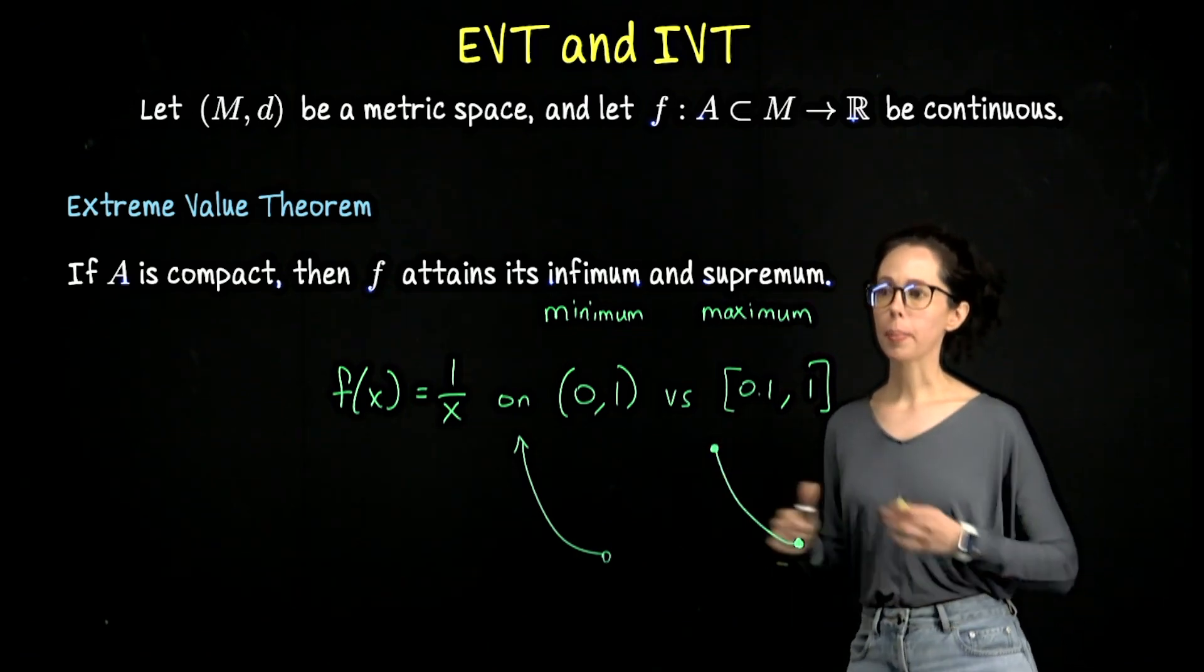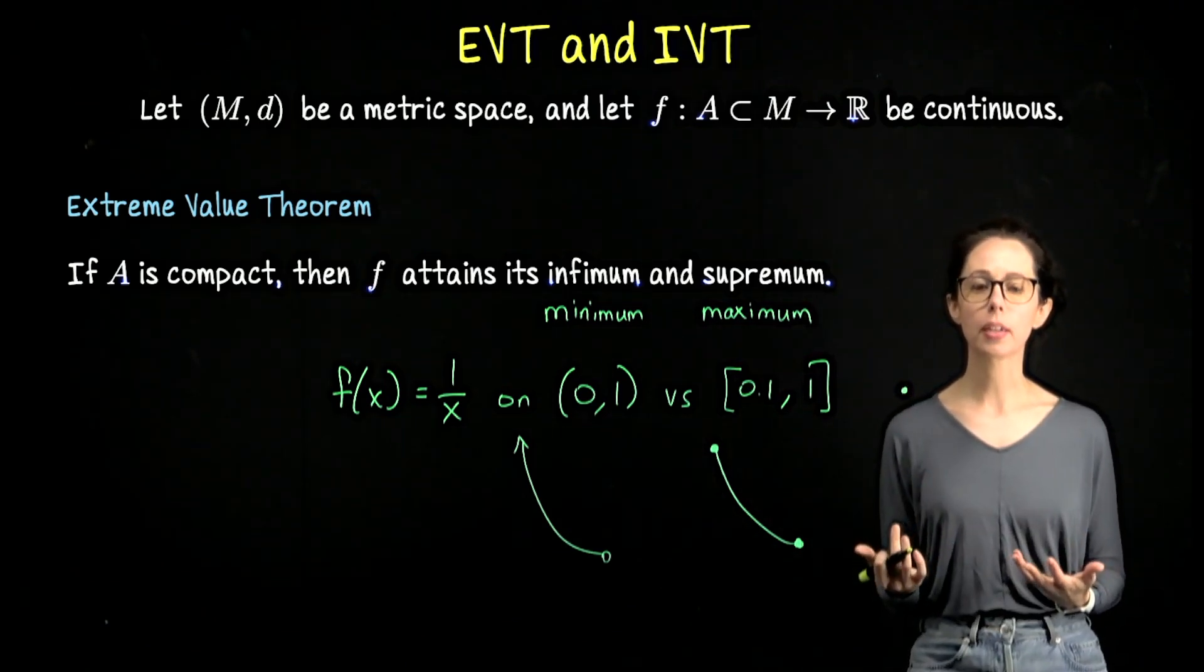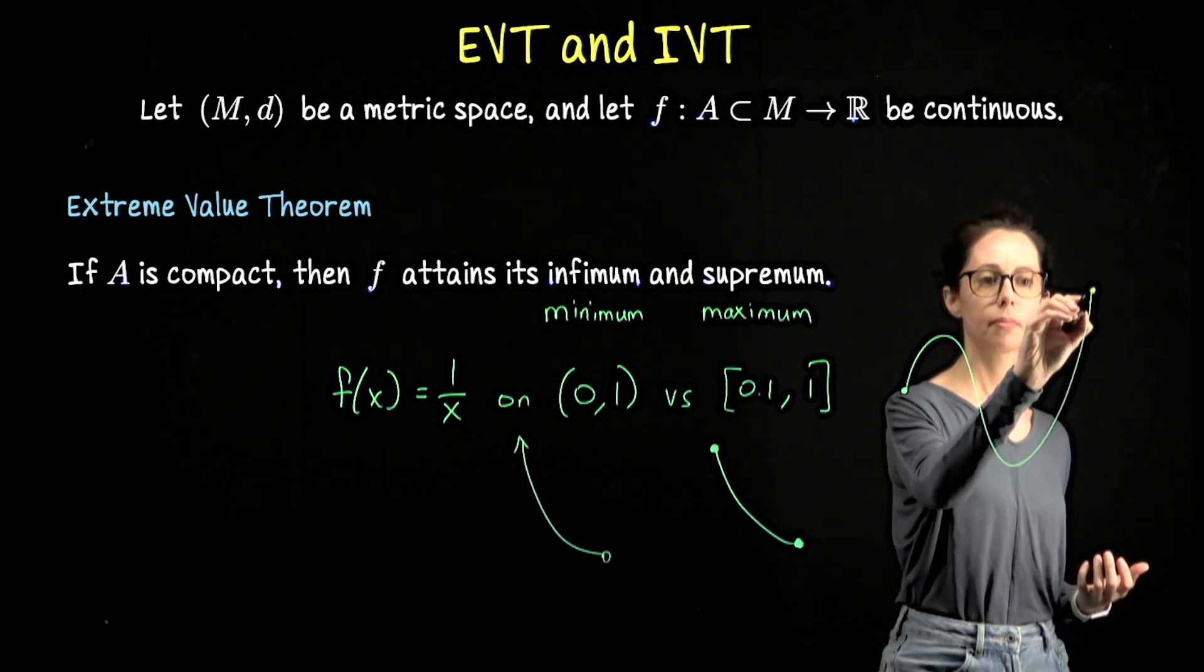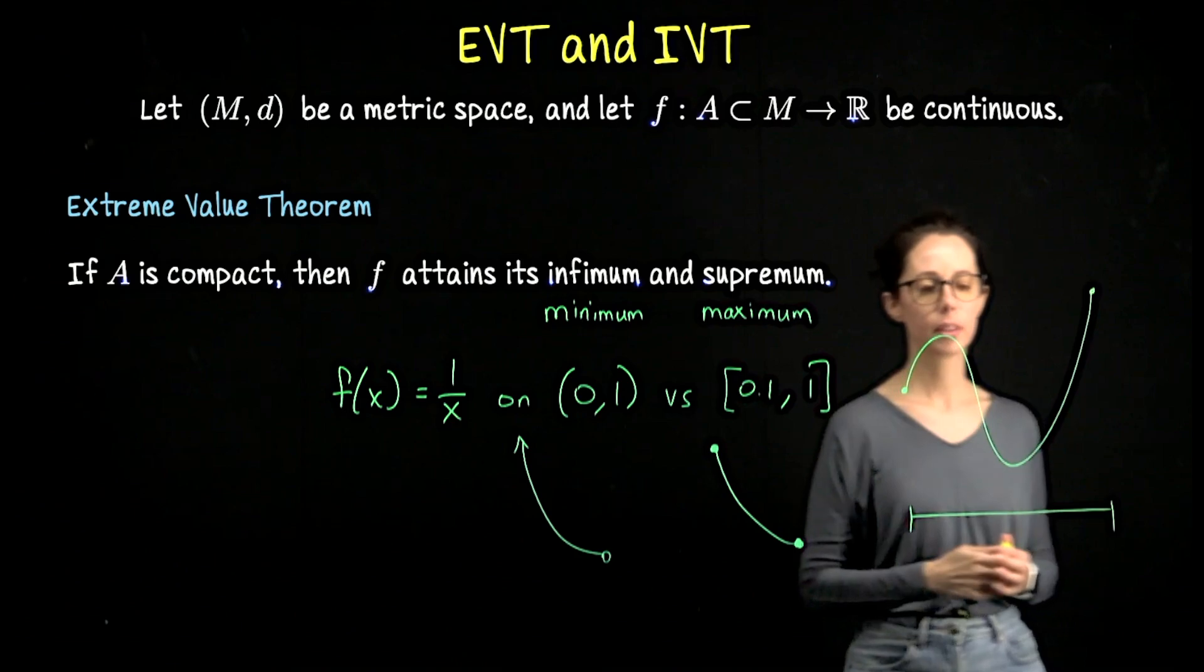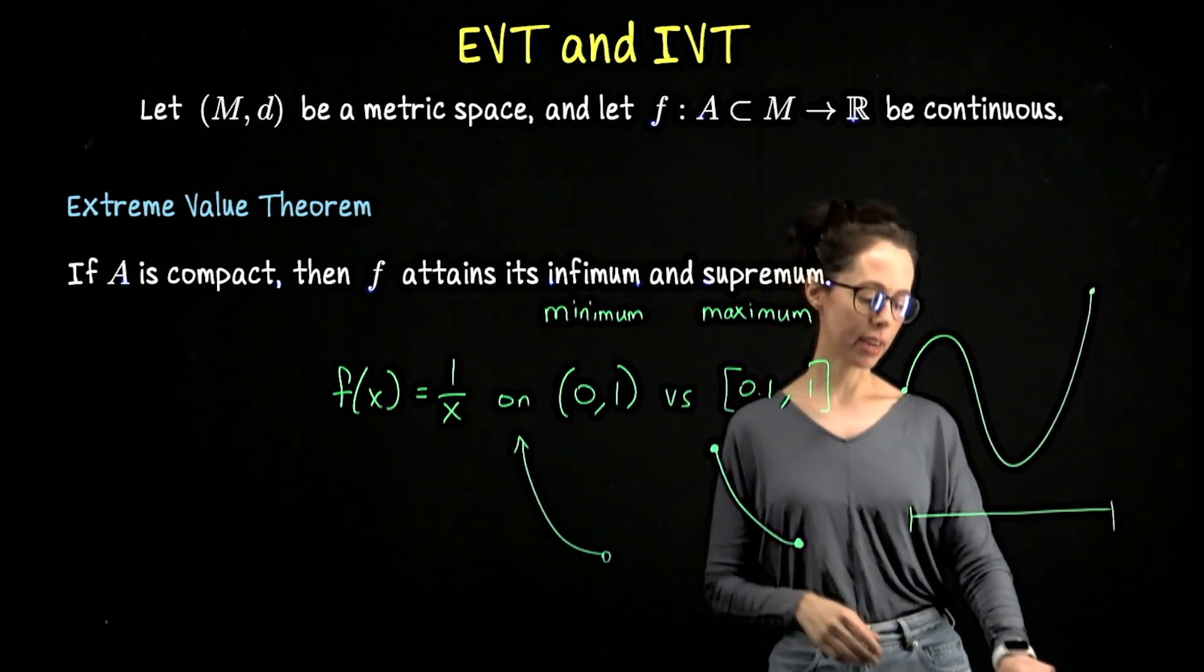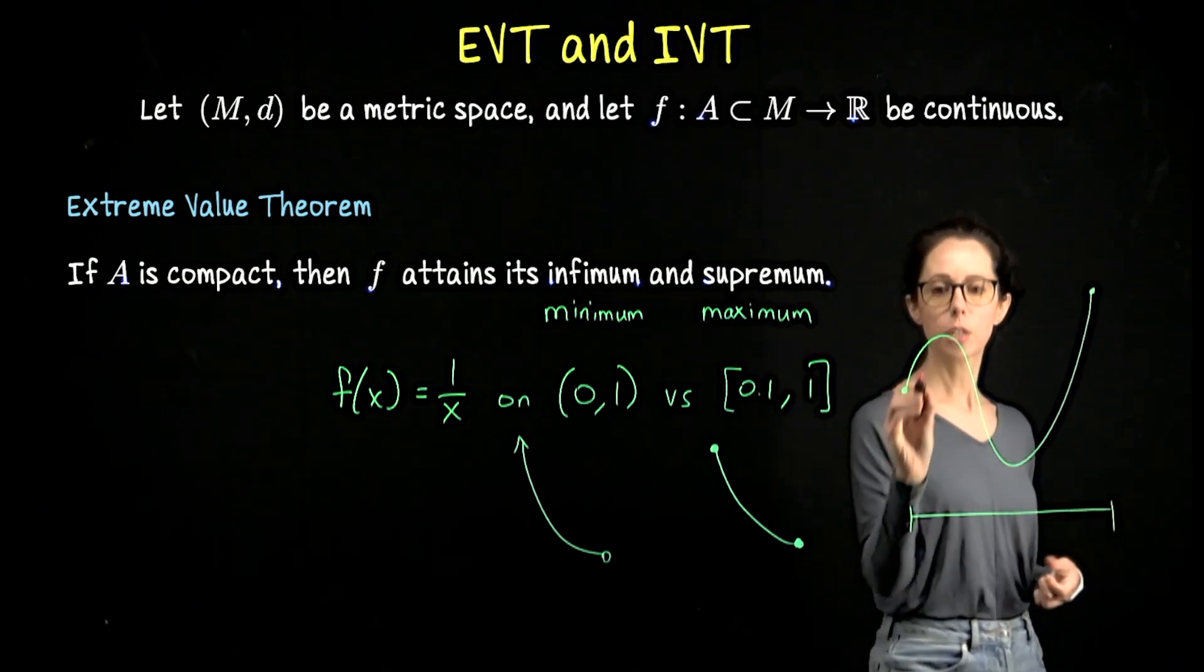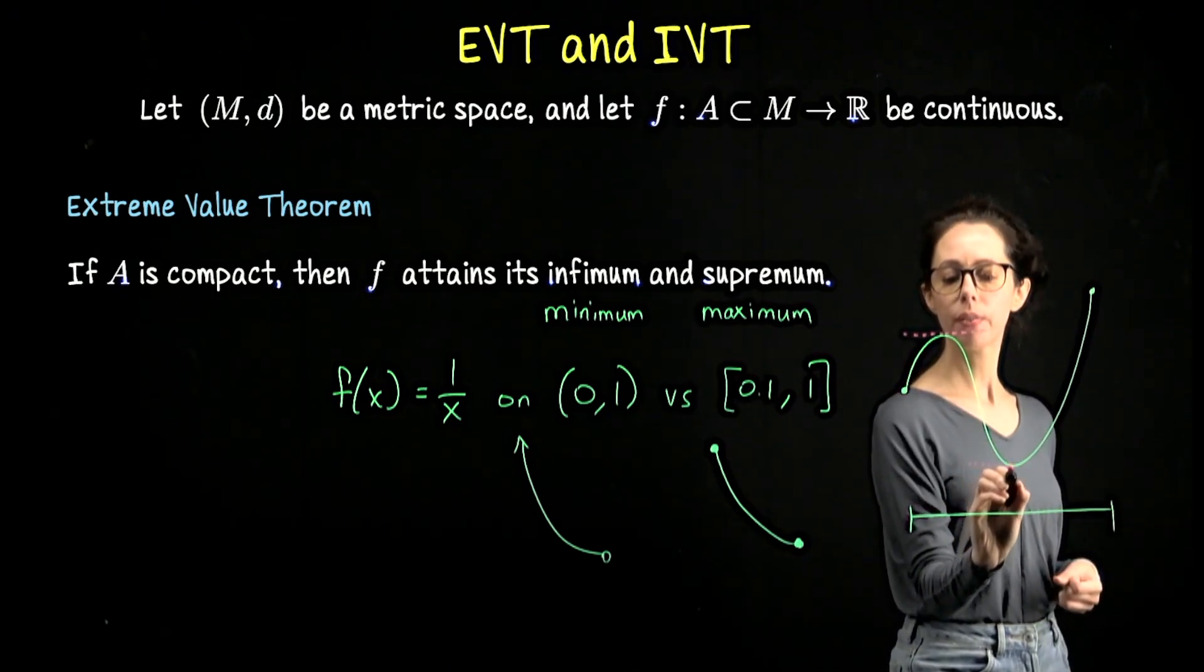Let me sketch one more picture before we do the proof. This is why when you optimize functions over closed bounded intervals, say functions from R to R. Say this is a function over a closed bounded interval.